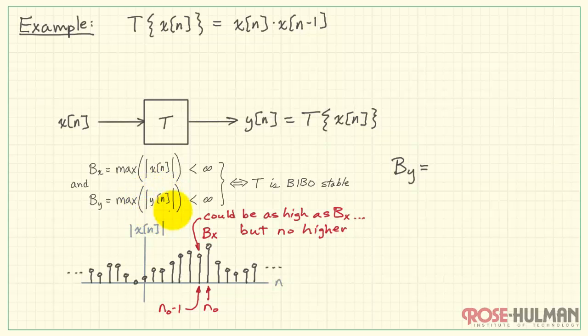Well, the bound on b_y is formed as the maximum absolute value of the output sequence. b_x, as it passes through the system, will give us this value, and then we need to multiply by the previous input sample. If we say that the previous input sample is, in fact, b_x, then the bound on the output, b_y, is b_x times b_x, or b_x squared.